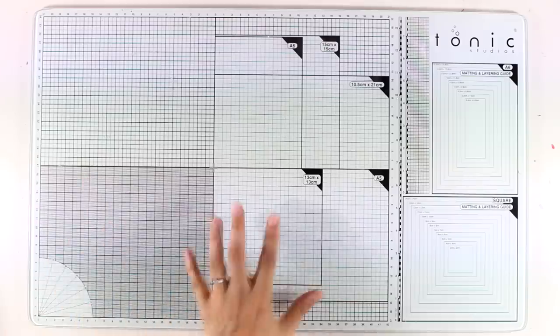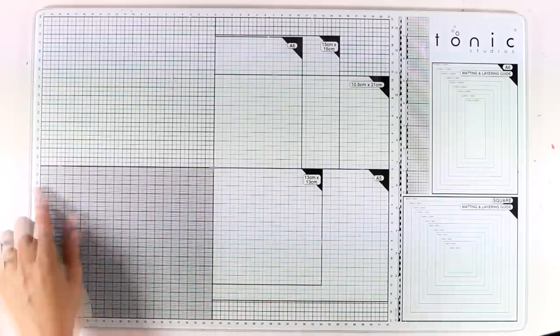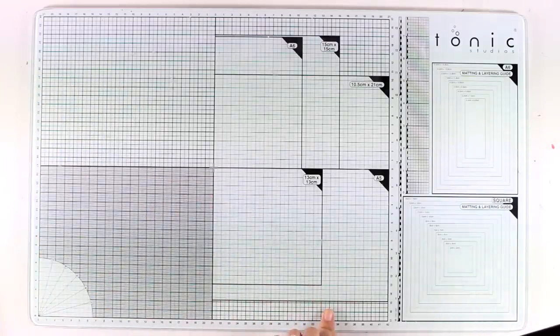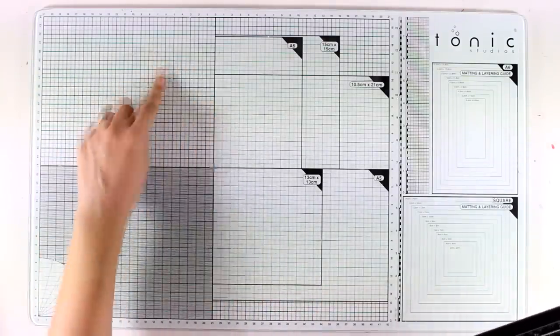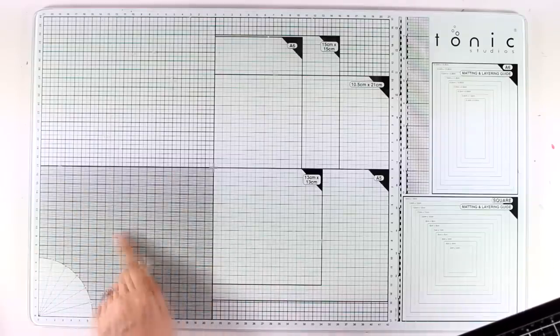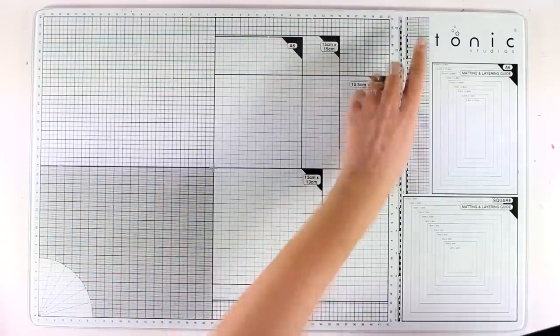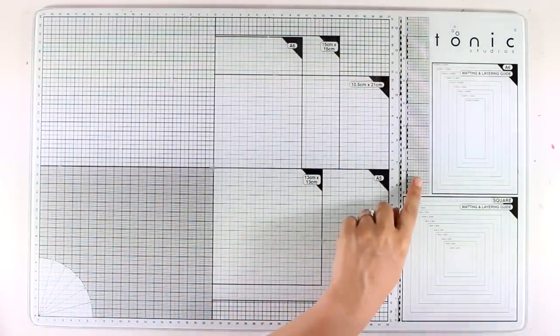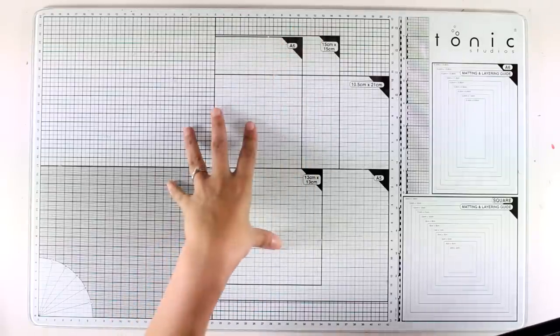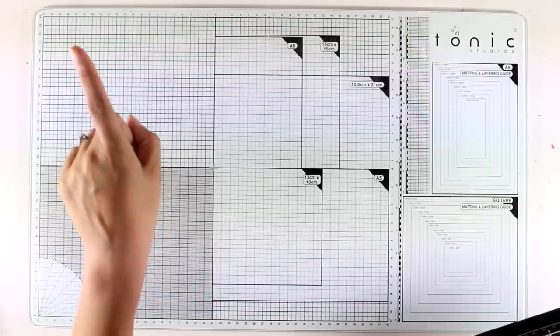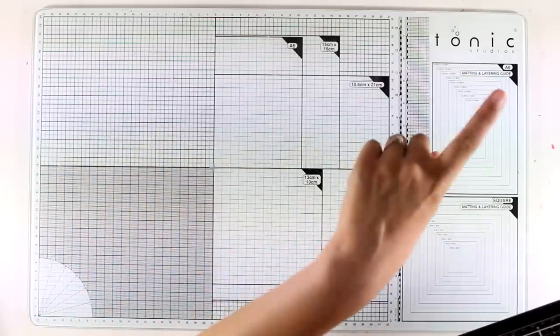Both glass mats have pretty much the same attributes but there are some differences. The size is the same, but in this white one the grid is in centimeters except for this part which is in inches. I did a review a while back on this white glass mat and you'll find a link somewhere up on my screen.